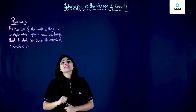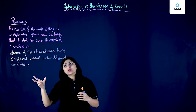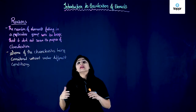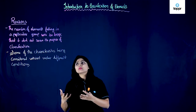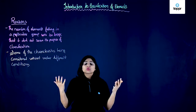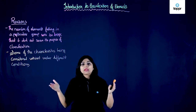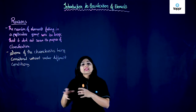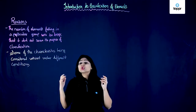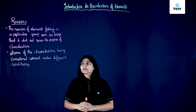Now let's go to the second reason. The second reason is that some of the characteristics being considered varied under different conditions. There were certain elements whose characteristics were fine at room temperature but varied at other temperatures or conditions. So they thought that classifying things according to a particular characteristic is not right, because that characteristic can be different at other conditions. Due to this, scientists felt the importance of classifying elements in a better way.